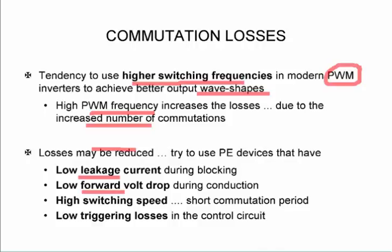Low forward voltage drop makes a significant difference because that can double the conduction losses if you go from 0.5 volt voltage to 1 volt. High switching speed which then reduces the commutation period, and low triggering losses. But the forward voltage drop is normally the most significant. Switching depending on the frequency can also become significant.